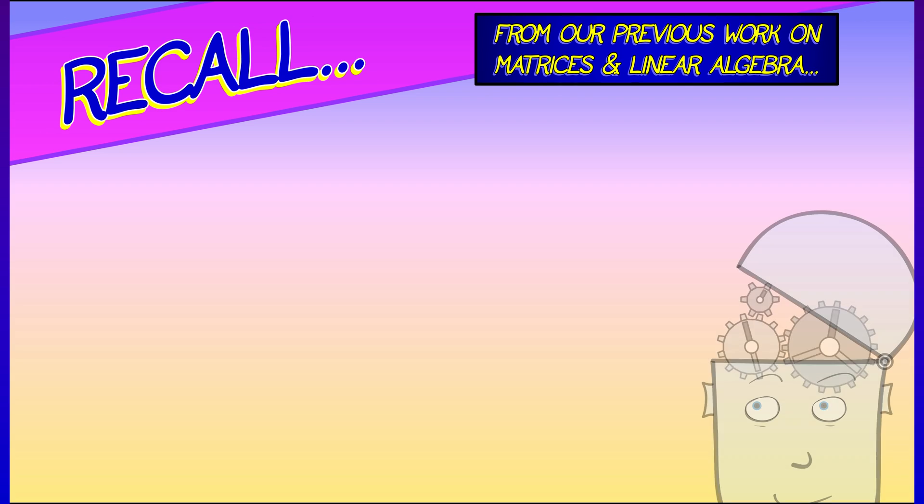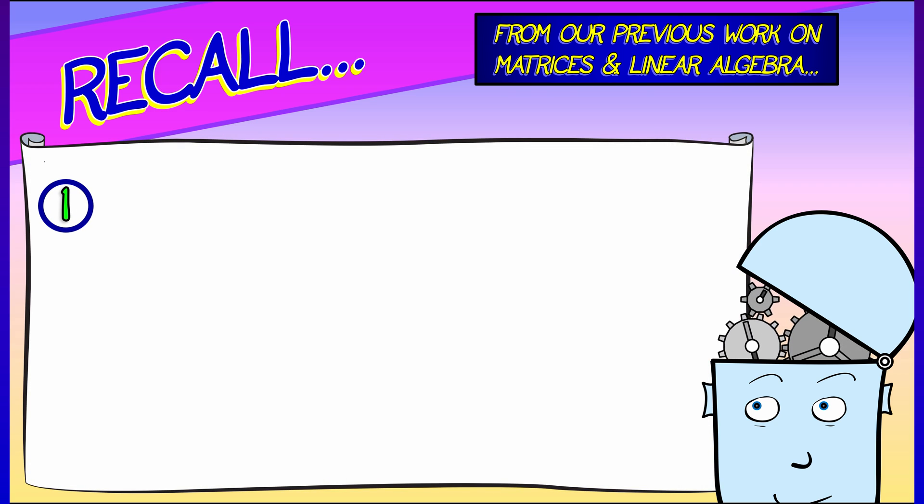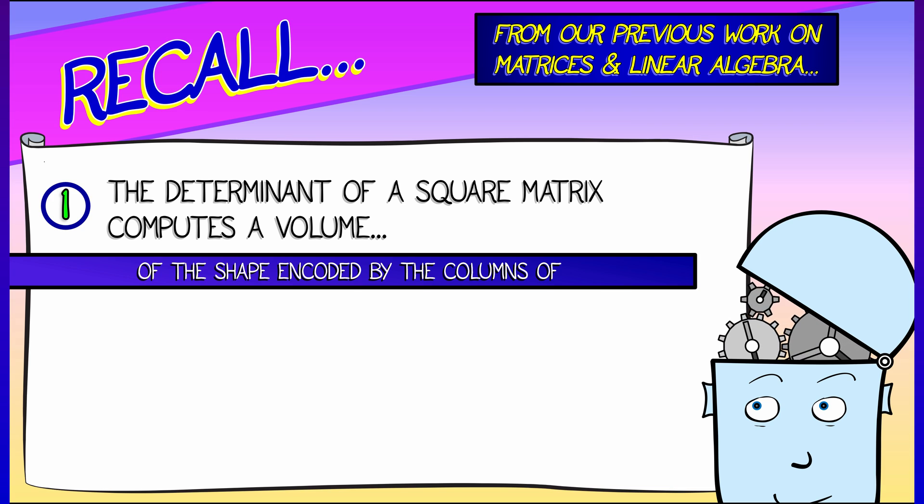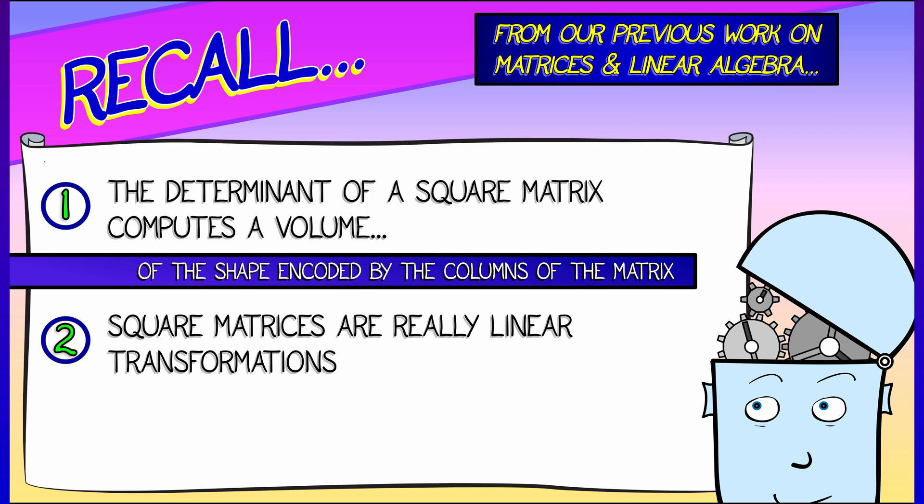Let's recall a few facts that we have learned previously in our work on matrices and linear algebra. The first of those facts is that if you've got a square matrix, then its determinant is telling you something geometric. It's telling you about the volume of a certain shape encoded by the columns of that matrix. And the second important fact is that square matrices are really interpretable as linear transformations.